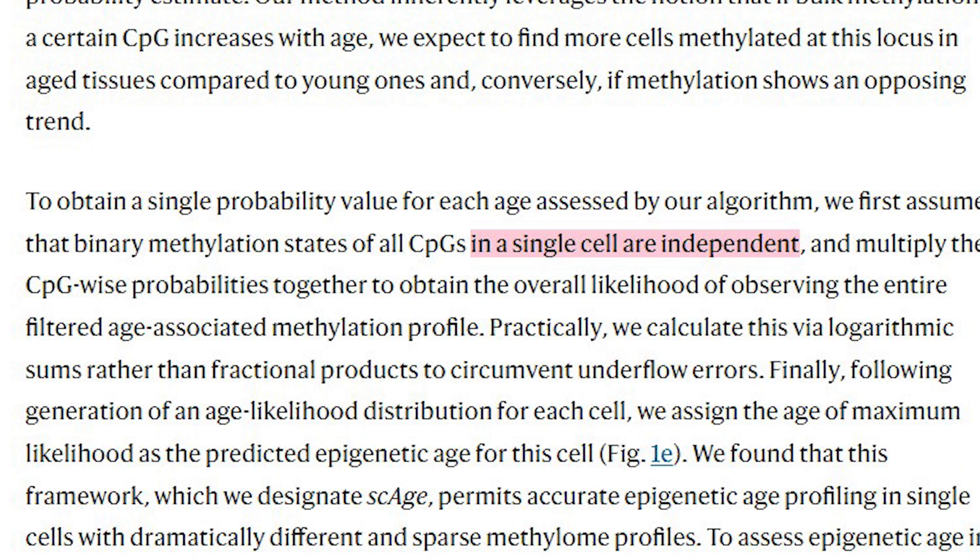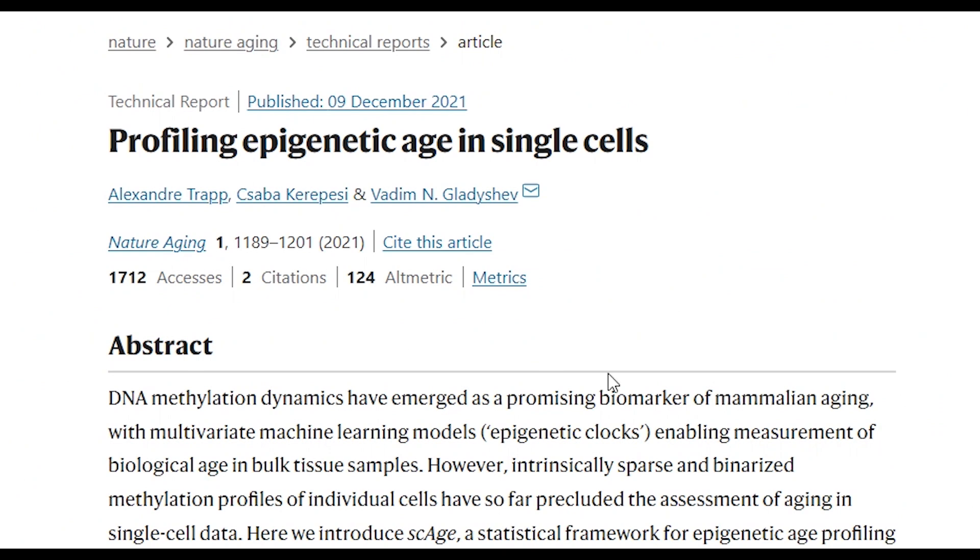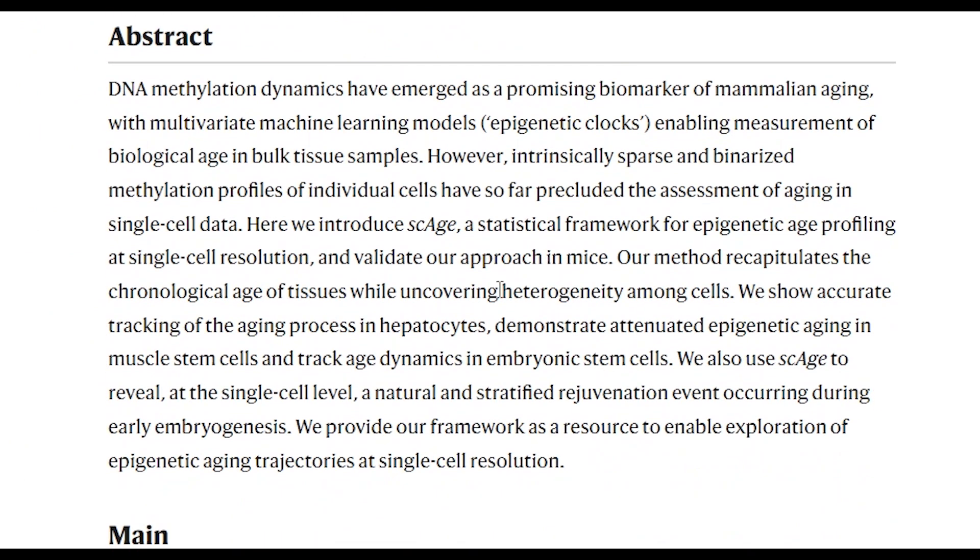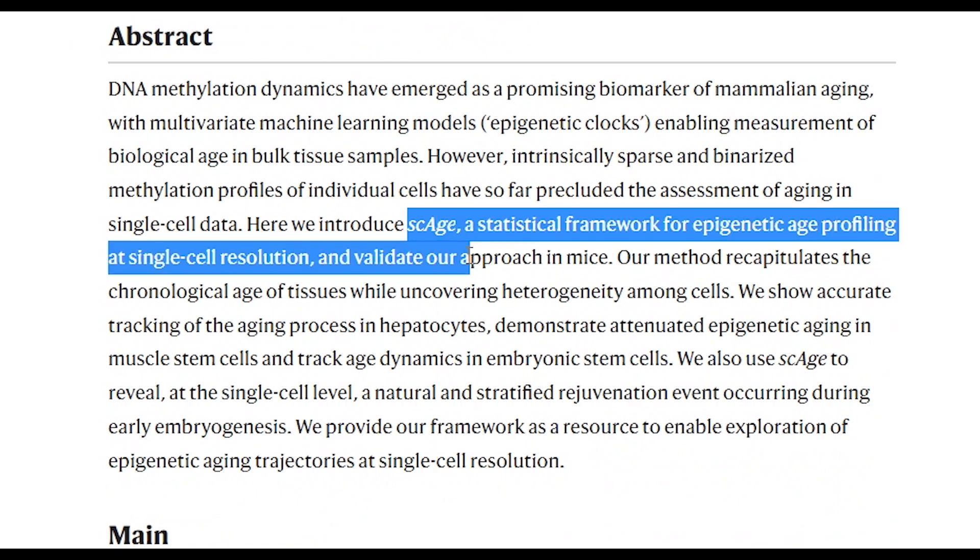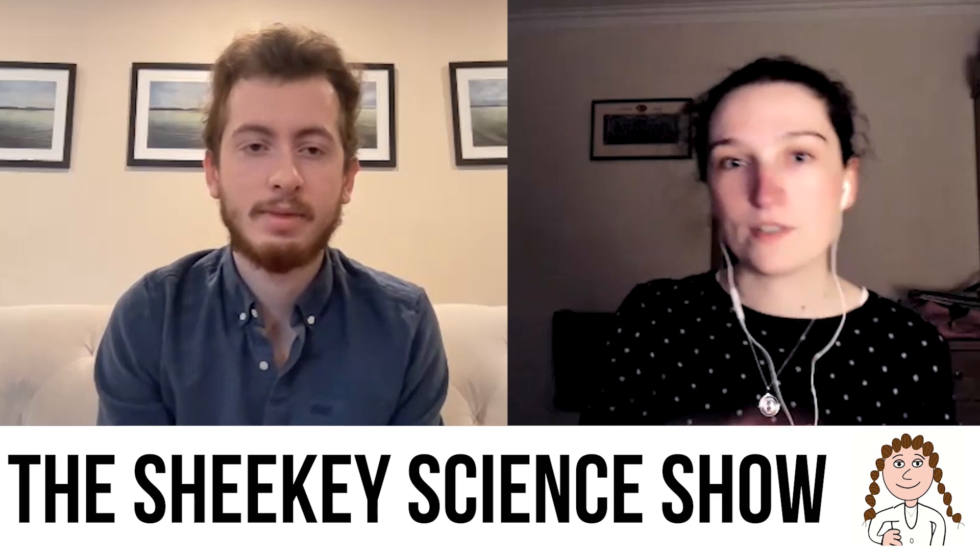Now since I don't think I did the best job of explaining this, I caught up with the lead author of this publication, Alex Trapp, who gives a much better explanation. Because we got single cells we don't get all of the CpG sites there's like less overlap between different cells and so does that mean when you predict the age for a single cell the CpG sites that you use are different for each one?